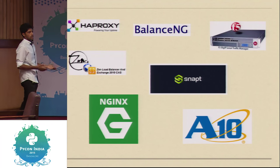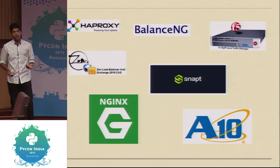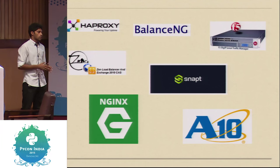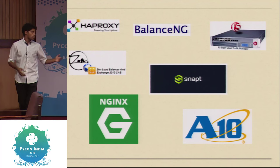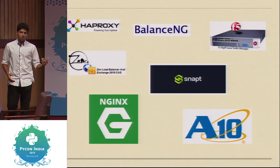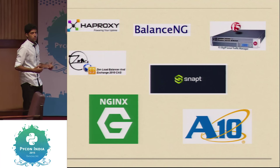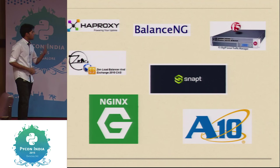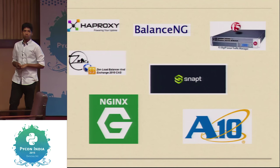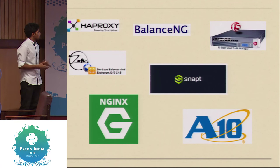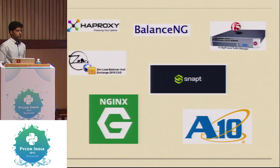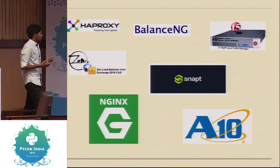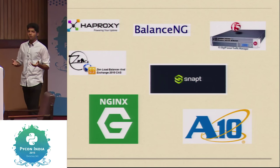There are many existing load balancers currently in the market that perform exceedingly well. For example, HAProxy offers HTTP or TCP proxying for web-based applications; F5 gives you a virtual load balancer alongside the standard one; Aten offers URL manipulations; and Nginx gives you the ability to configure weights for each server. Since each application has specific needs, you can tweak a load balancer to fit your requirements.